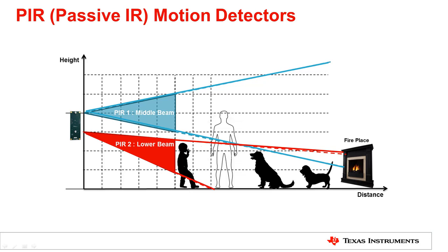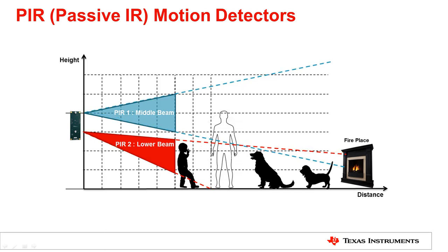PIR motion detectors are commonly used in industrial and building automation systems and applications like video surveillance or lighting networks. Think about automatic lights in large buildings or your thermostat that lights up as you walk by for everyday examples. In this image, we see an example of a dual detector that combines two sensors to provide a wider detection angle, as indicated by the blue and red dotted lines.